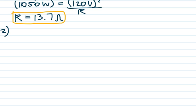Number two asks whether you can run the toaster on a 15-amp circuit when the microwave oven is pulling 10 amps — justify your answer mathematically. First, you need to know that your house is wired in parallel. That's why all of the outlets in your house are 120 volts and they all operate independently of each other.